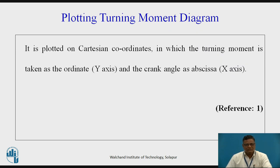The turning moment diagram is plotted on Cartesian coordinates. On the x-axis (abscissa), we take the crank angle. On the y-axis (ordinate), we take the turning moment.